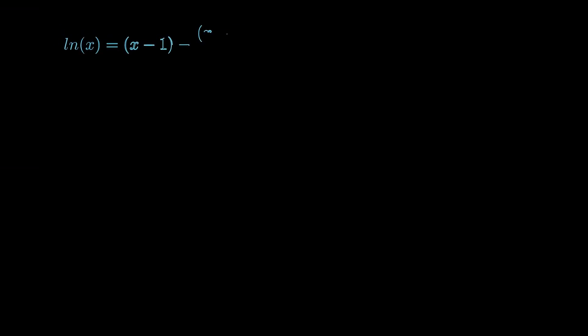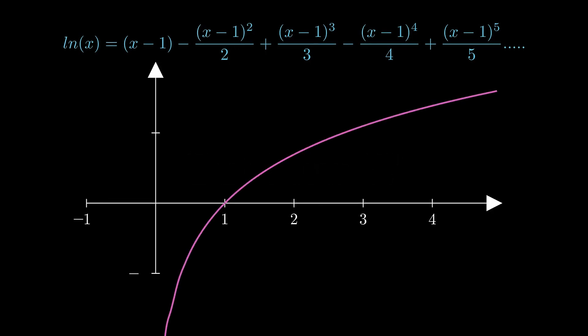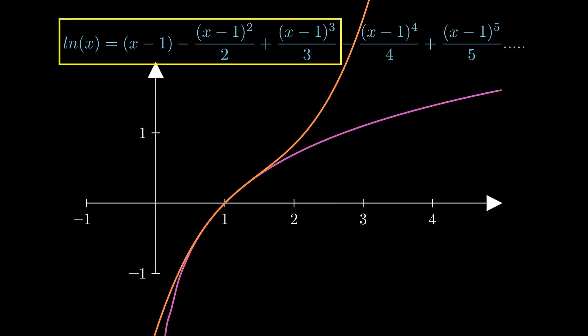They found that the behavior of natural log of x mimicked with its specific polynomial within some range. We will later explore the proof but first, let's look at this graphical visualization. If I keep adding the terms, the polynomial perfectly aligns with natural log function.